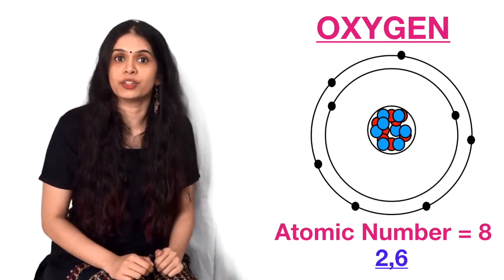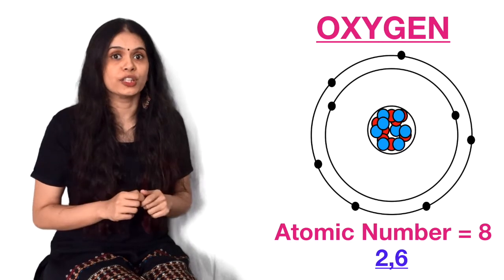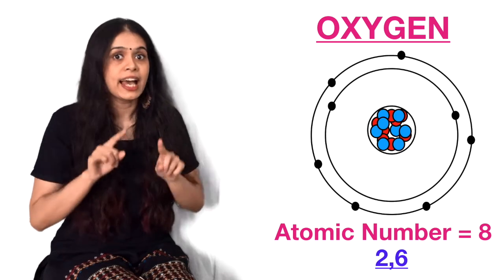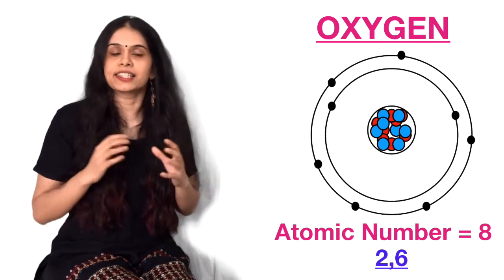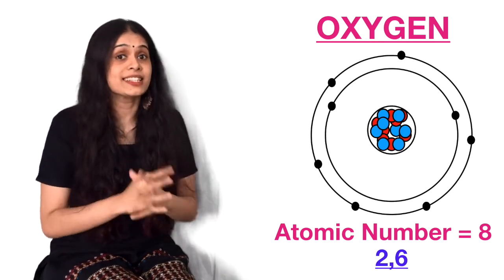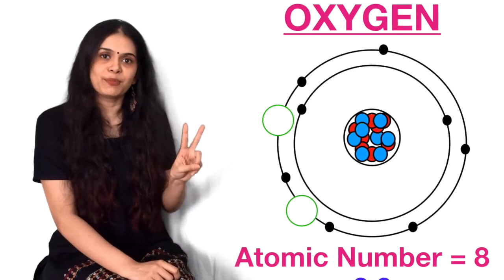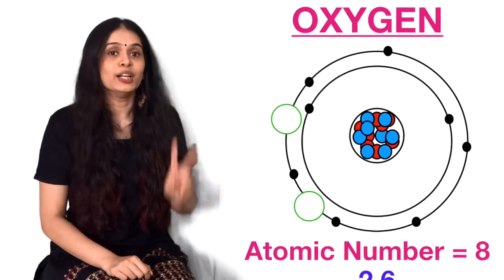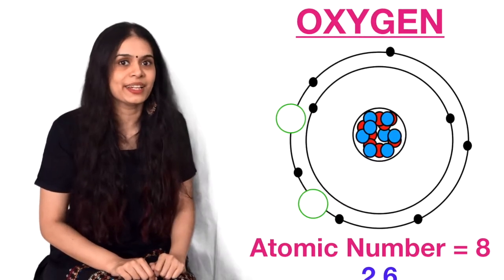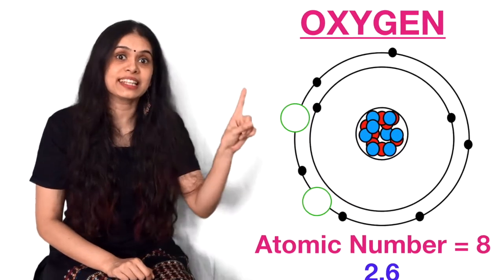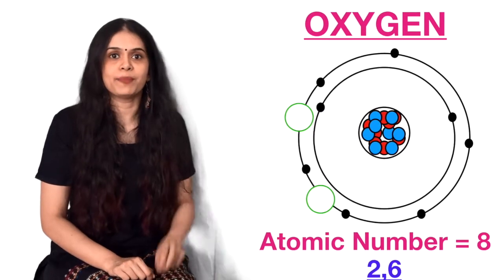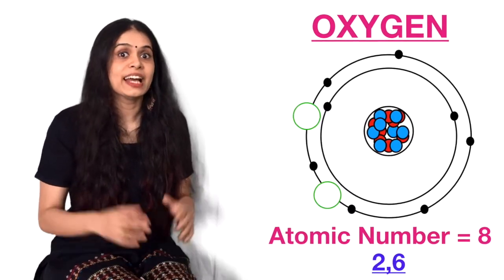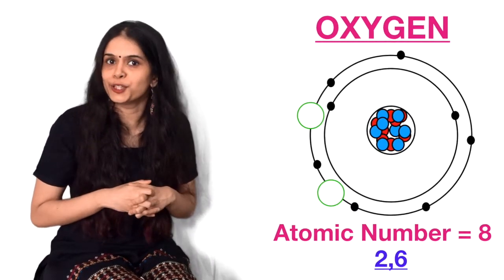Now let us look at oxygen. The atomic number of oxygen is eight. Toh andar wale shell mein, do hongi electrons. And second shell mein six electrons. So how many seats are empty? Two seats are empty. Right? Because it has eight seats. Eight seat mein, chheh electron baith gaya. Lekin do seat toh abhi bhi khali hai. And usi tarah hydrogen ke paas ek seat khali hai. Oxygen ke paas do seat khali hai. So do you think hydrogen and oxygen can bond together? Can they come together to form molecules?